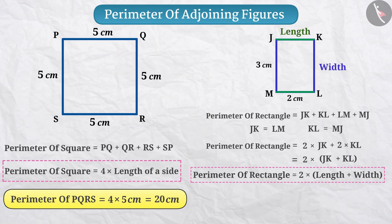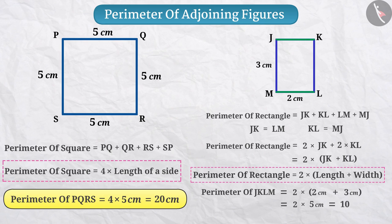For example, the perimeter of the rectangle JKLM will be 2 multiplied by 2 cm plus 3 cm is equal to 2 multiplied by 5 cm is equal to 10 cm.